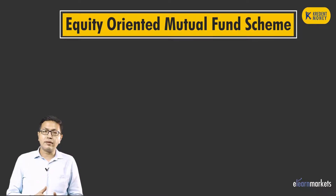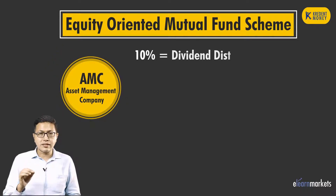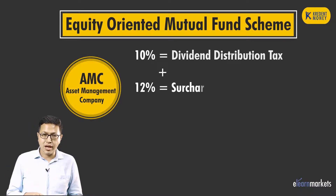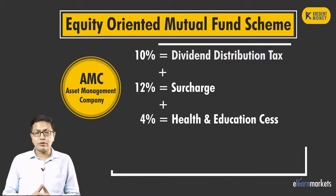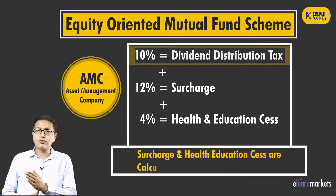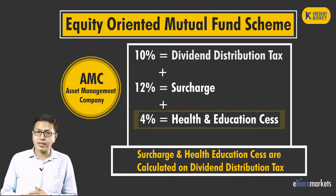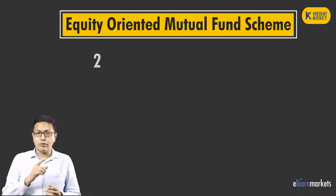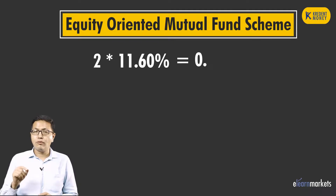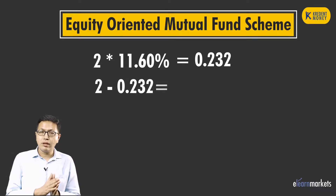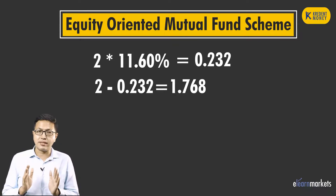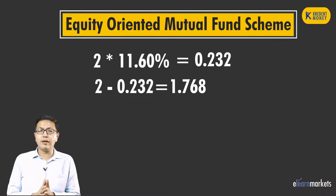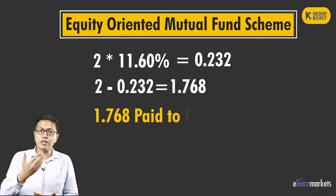So what are the rules and what is the percentage? Since this is an equity scheme, in the case of an equity-oriented mutual fund scheme, the rule says that the AMC will deduct 10% as the Dividend Distribution Tax, plus 12% surcharge, plus 4% health and education cess. Together it comes to 11.60% total tax. So 2 rupees multiplied by 11.60% — that amount will be deducted from rupees 2, and the balance I will get as tax-free in my hands.